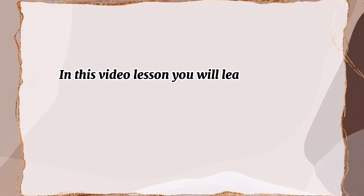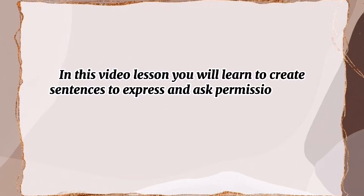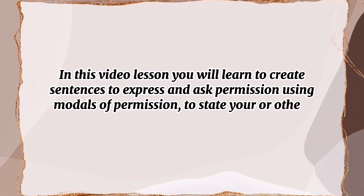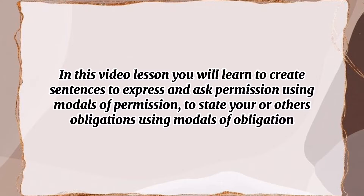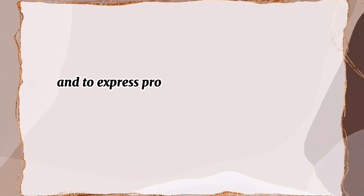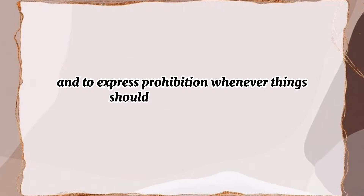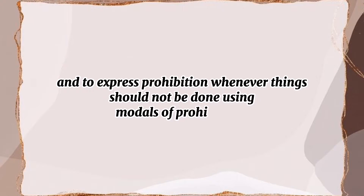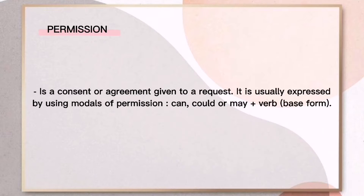In this video lesson, you will learn to create sentences to express and ask permission using Modals of Permission, to state your or others' obligations using Modals of Obligation, and to express prohibition whenever things should not be done using Modals of Prohibition. Permission is a consent or agreement given to a request. It is usually expressed by using Modals of Permission: can, could, or may, plus the verb in its base form.